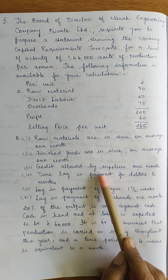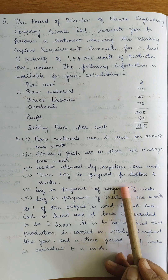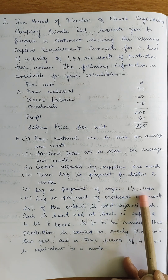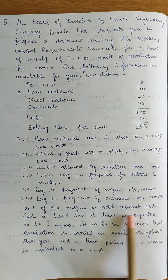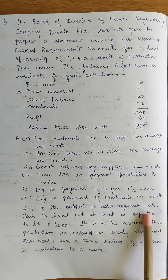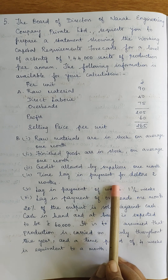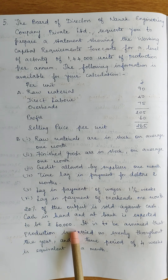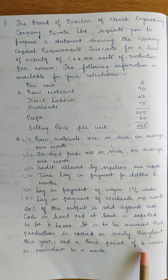So, raw materials are creditors, holding period is 1 month. Time lag in payment for debtors: credit sale is 1 month and customers pay after 2 months. Lag in payment of wages: wages outstanding are 1 and a half weeks. Overheads creditors: that's 1 month. Output: 20% is cash sales, so 80% is credit sales — that's the debtors. Cash in hand and cash at bank minimum is 60,000.